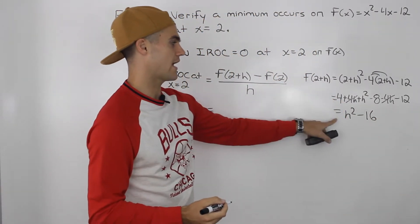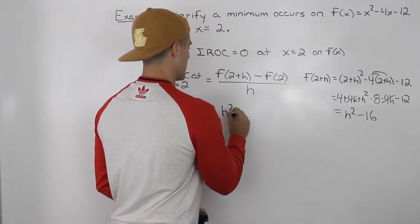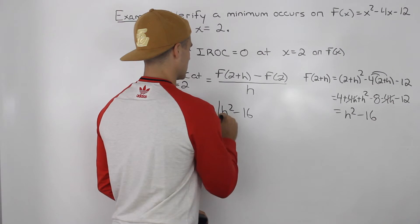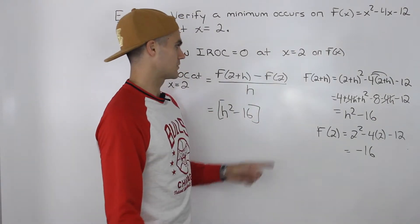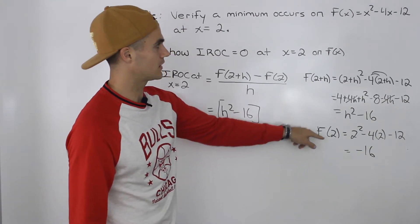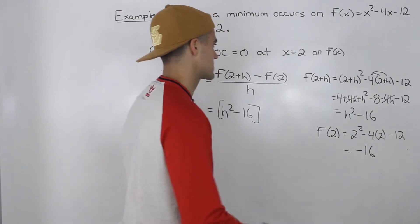So f(2+h) ends up simplifying to h² - 16. That is the f(2+h) portion. And then similarly, if we find out what f(2) is going to be, plugging in 2 for the x values, we would end up with negative 16.